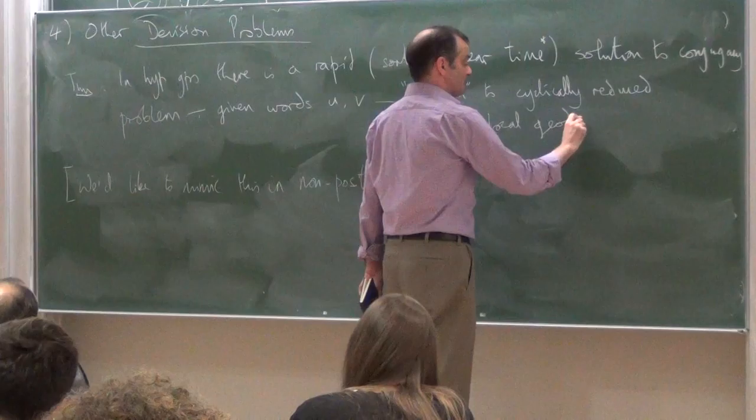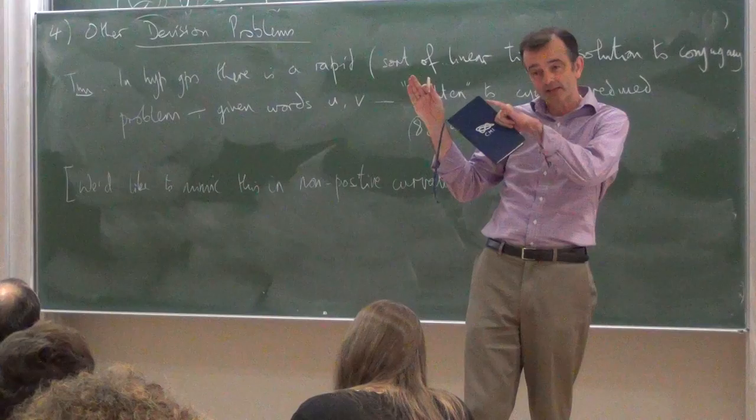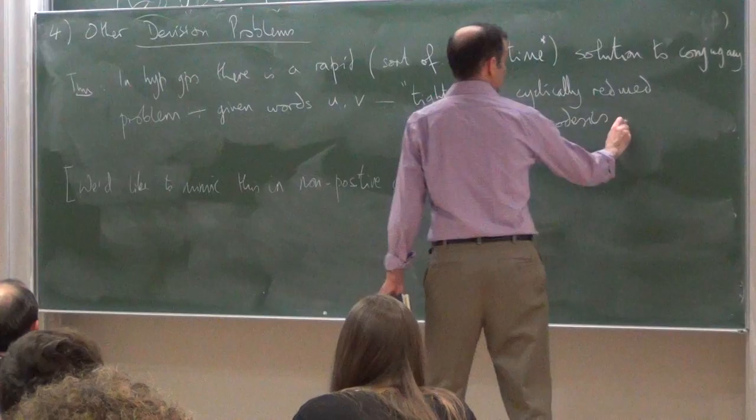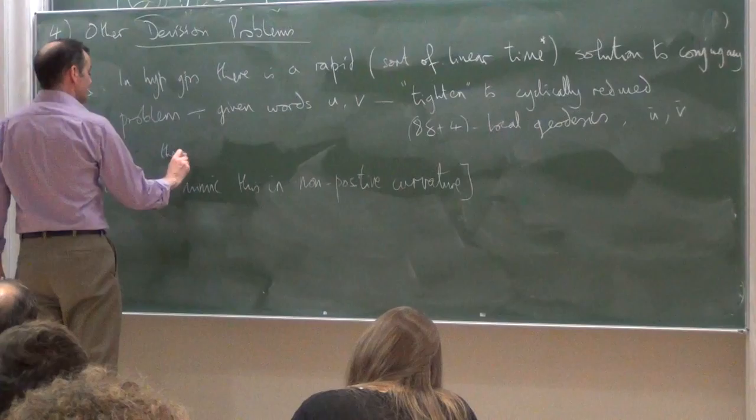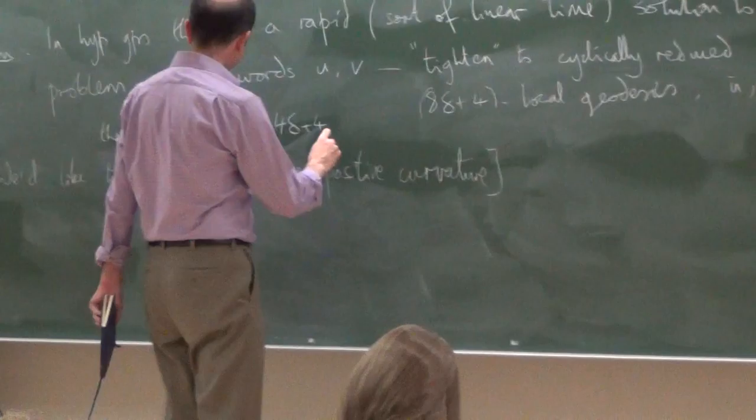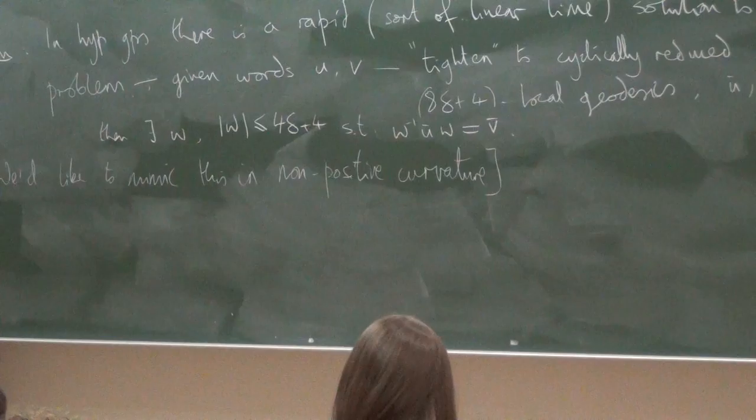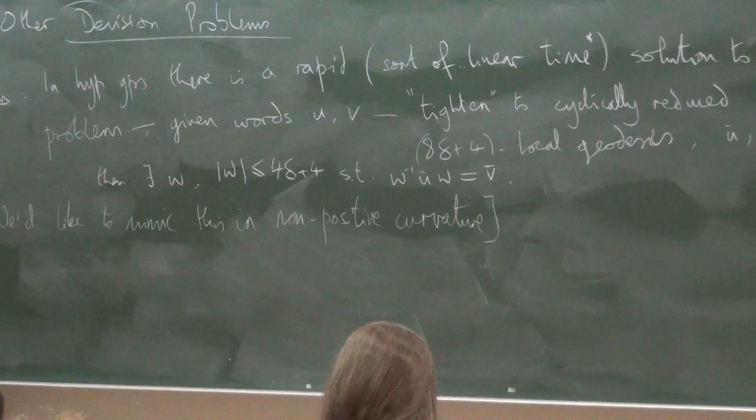What you do is, given two words U and V, you tighten to cyclically reduced 8 delta plus 4, I think it is, local geodesics. Because we've got a Dehn algorithm, we can do that very quickly. You make it geodesic, or you make it locally geodesic. Just make sure that each segment up to 8 delta is a geodesic. Tighten locally and do it cyclically, so you get these words U bar and V bar.